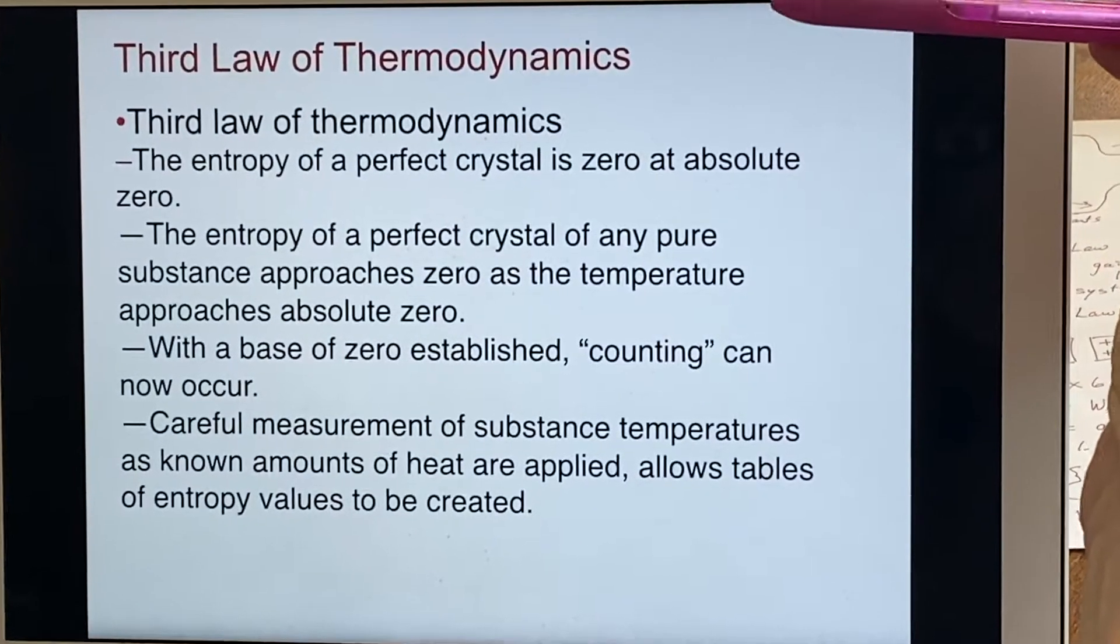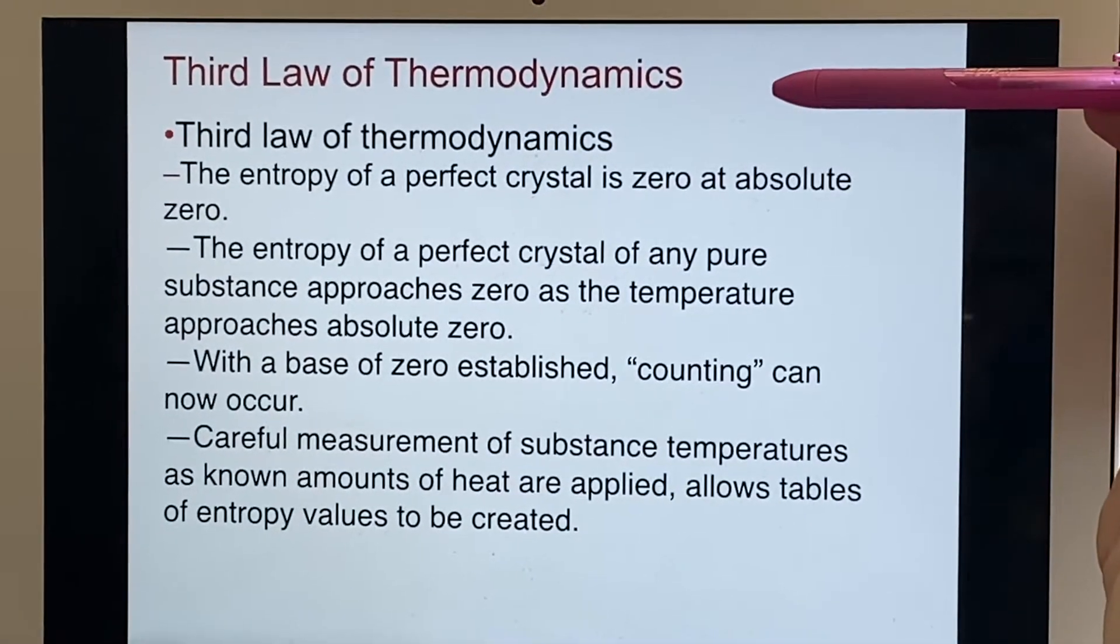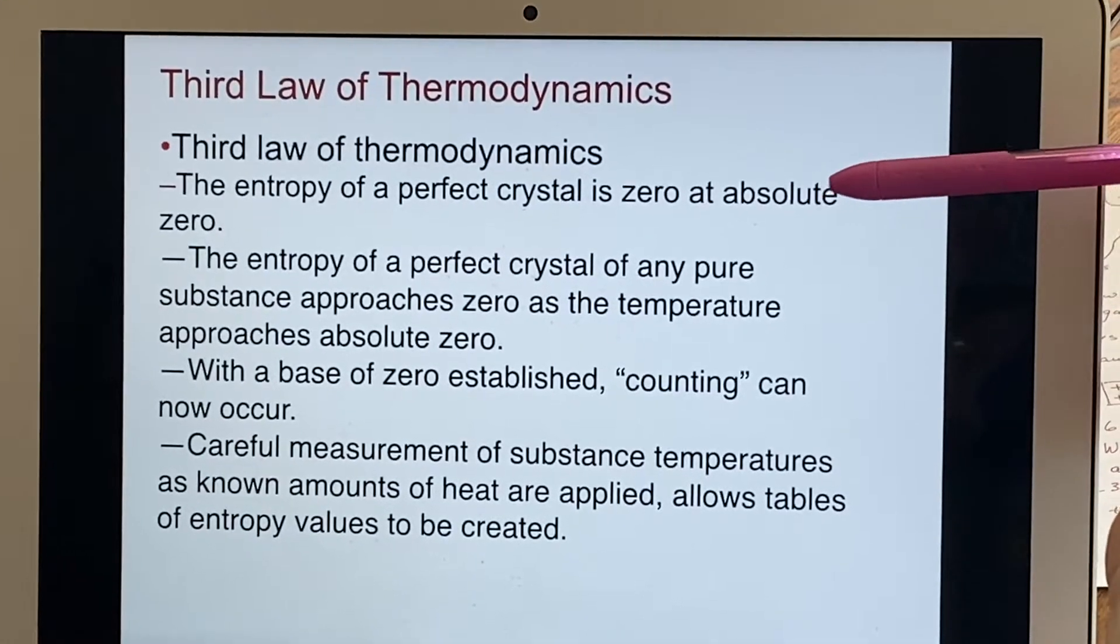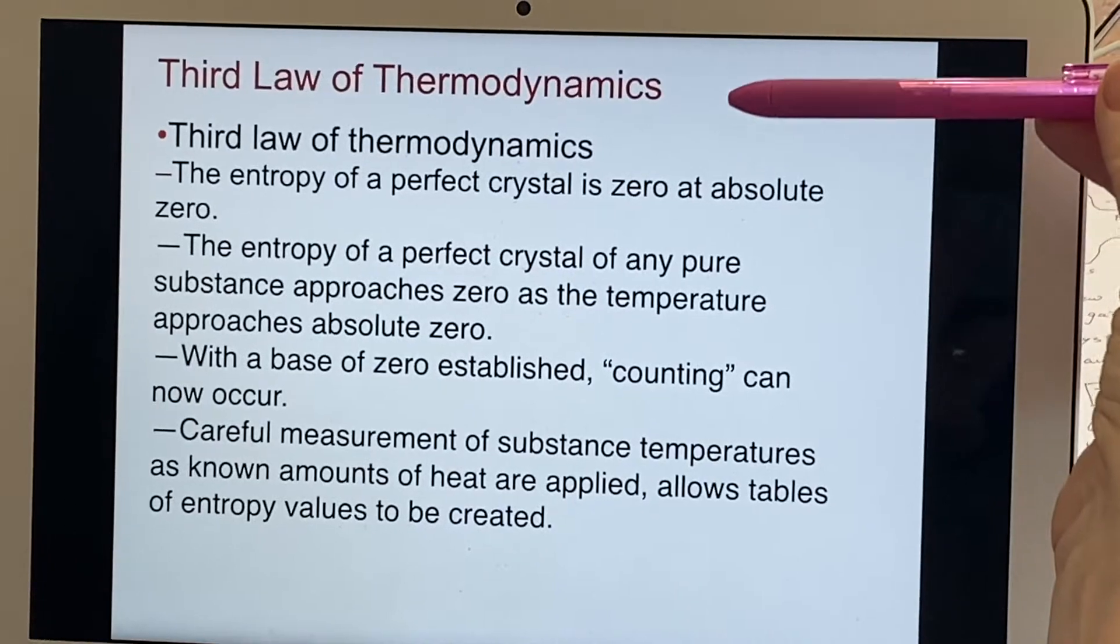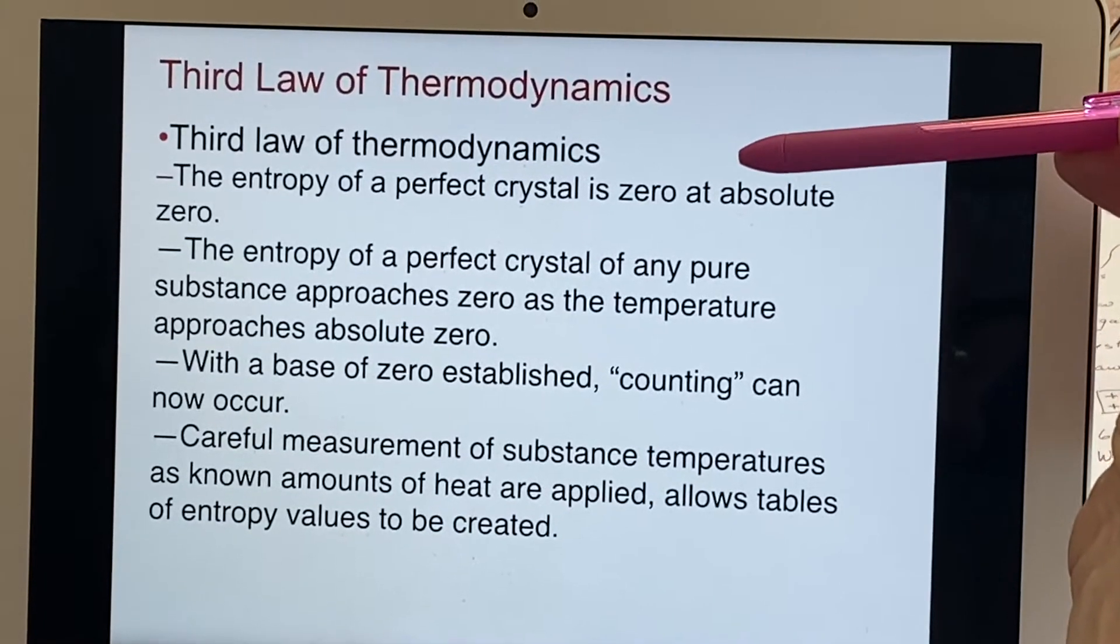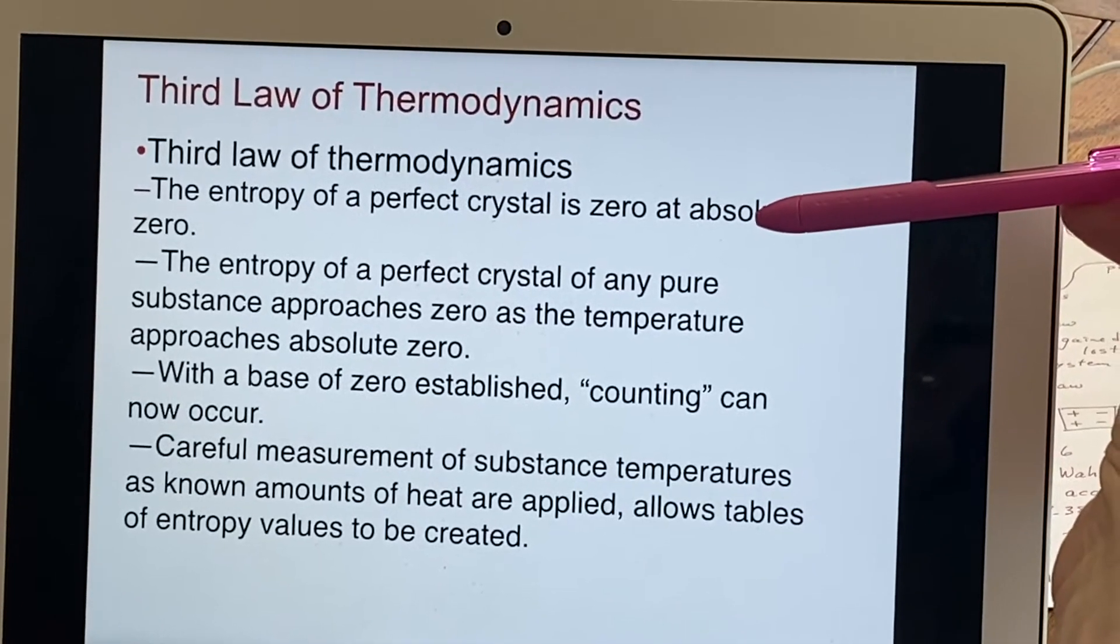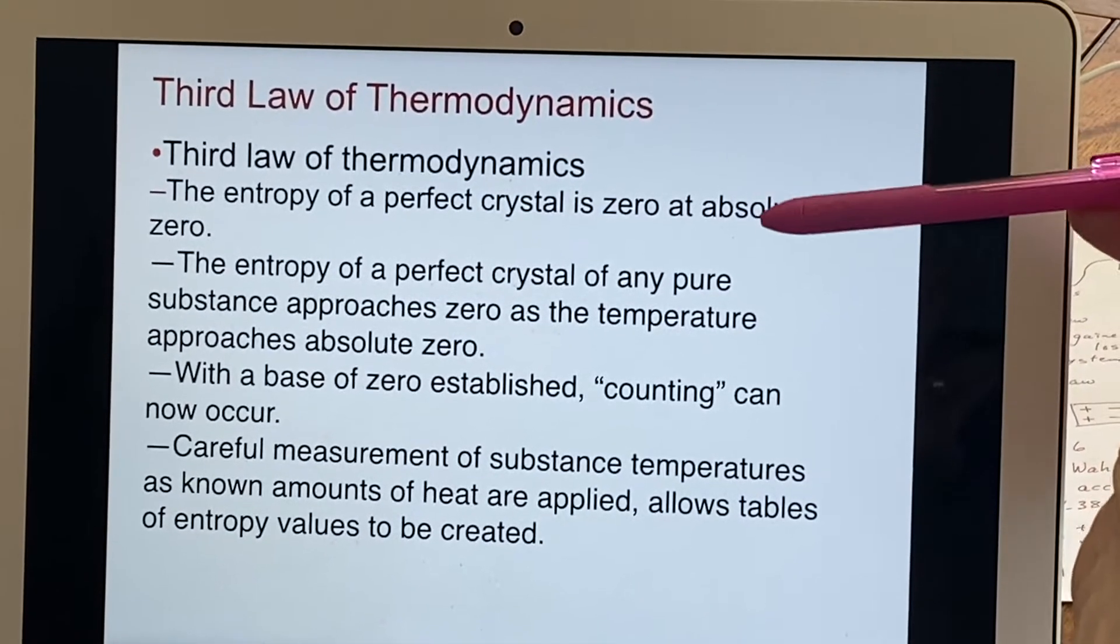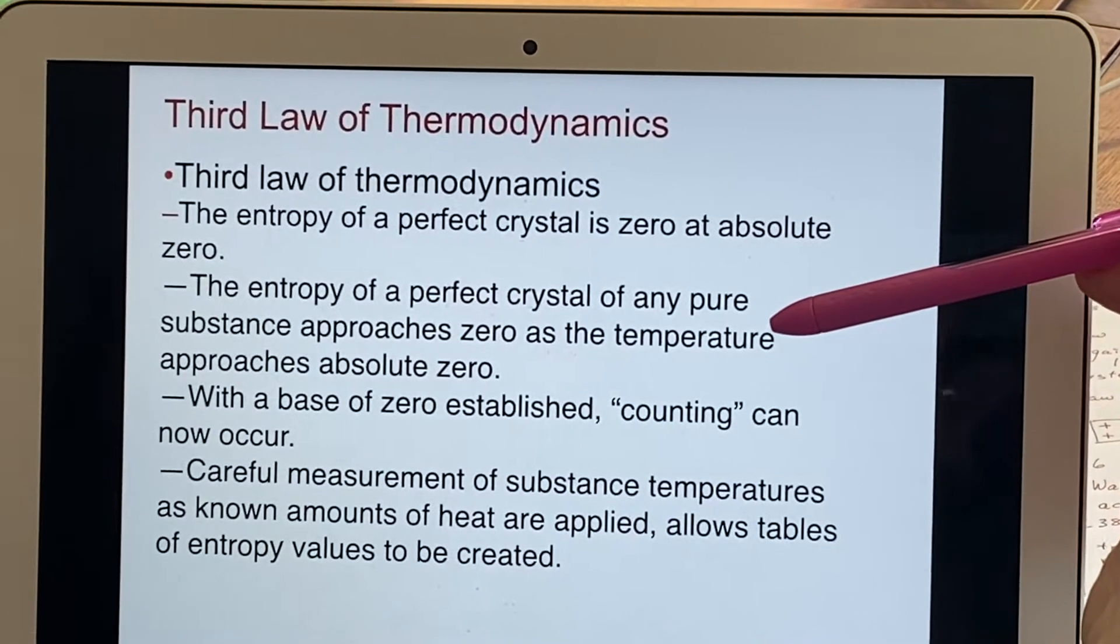Which brings us to the third law of thermodynamics. In the third law of thermodynamics, we specify where zero is, essentially. And we say that the entropy of a perfect crystal would be zero at the temperature of absolute zero. So the entropy of a perfect crystal of any pure substance will approach zero as the temperature approaches zero.